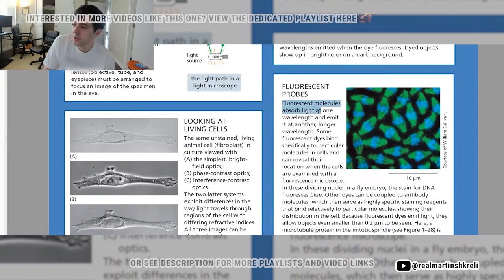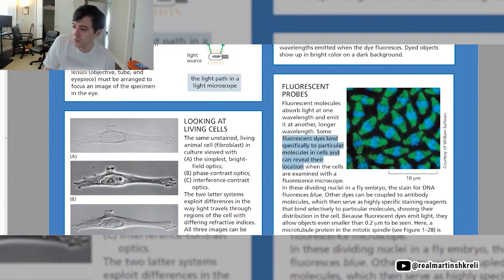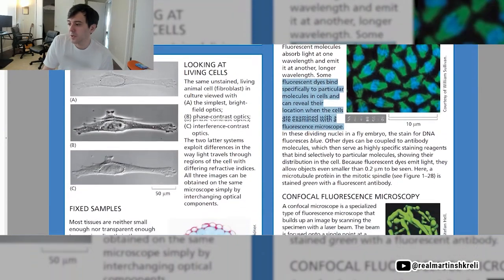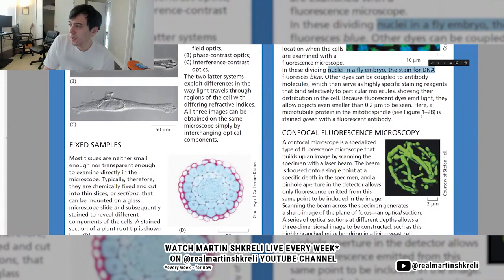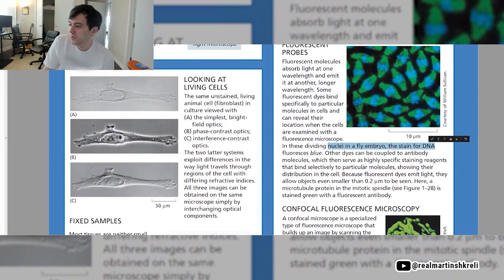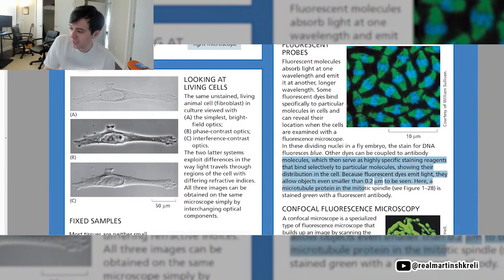Fluorescent probes. Fluorescent molecules absorb light at one wavelength and emit at another longer wavelength. Some fluorescent dyes bind specifically to particular molecules and cells and can reveal their location. In these dividing nuclei in a fly embryo, the stain for DNA fluoresces blue. Other dyes can be coupled to antibody molecules which can serve as highly specific staining reagents. Because fluorescent dyes emit light, they allow objects even smaller than 0.2 micrometers to be seen. A microtubule protein in the mitotic spindle is stained green with a fluorescence antibody. Why is that true? It's a good question.